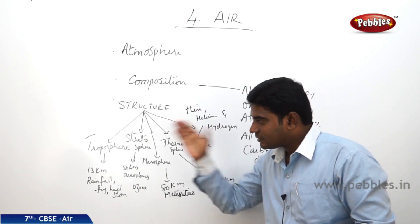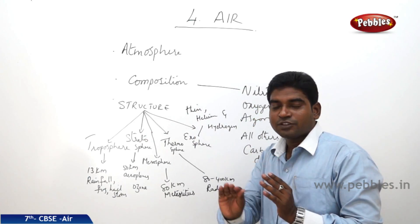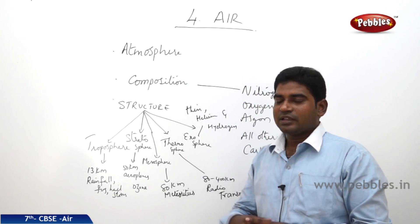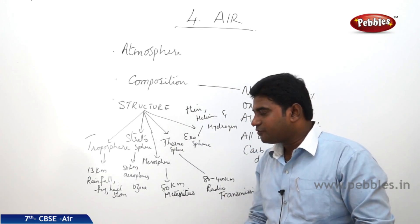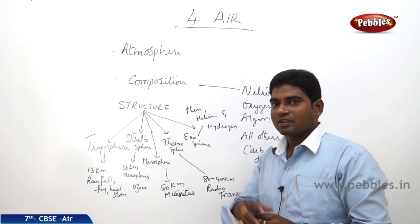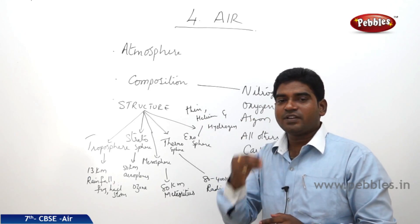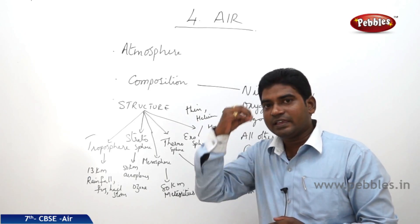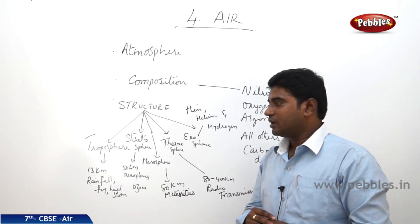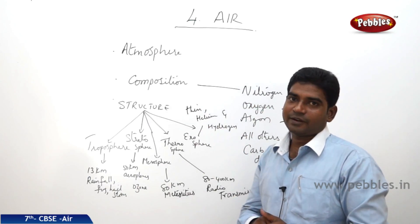In the first layer, the troposphere, it is from 0 kilometers to 13 kilometers. The entire rainfall, precipitation, fog, hail, snow — everything happens in this layer only. So this is one of the most important layers for mankind.